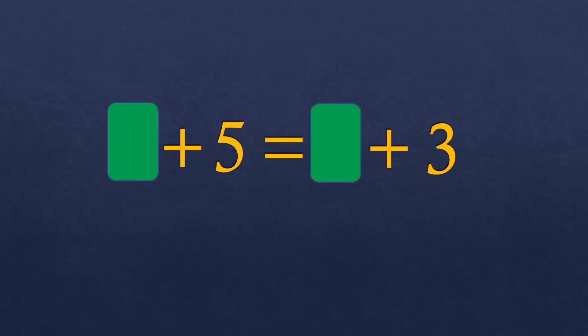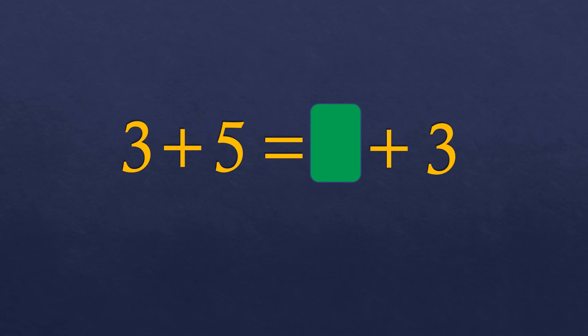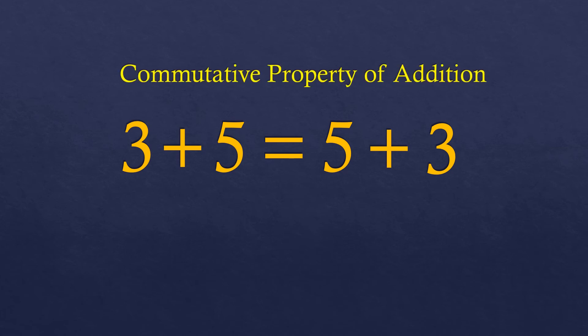We have another equation: blank plus 5 equals blank plus 3. Looking at the right side, there is plus 3, so the missing number on the left must also be 3, giving 3 plus 5. And on the right, the missing number must be 5 since there is 5 on the left, giving 5 plus 3. So we have 3 plus 5 equals 5 plus 3, which shows the commutative property of addition.